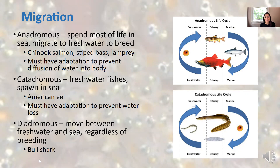Catadromy, or catadromous fish, are freshwater fish that spawn in the sea. The one example of catadromy is the American eel. They must have the adaptation to prevent water loss when they go from freshwater to saltwater, to prevent all the water from diffusing out of their body.